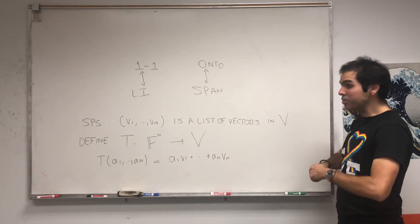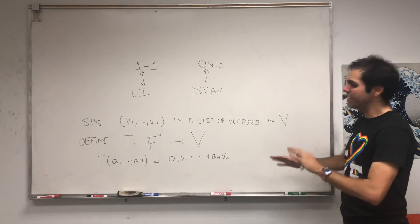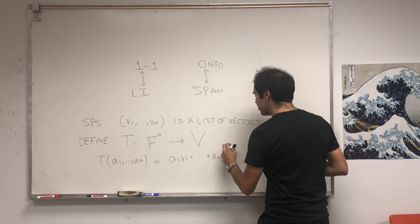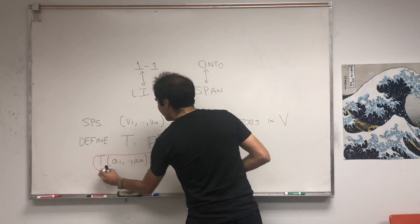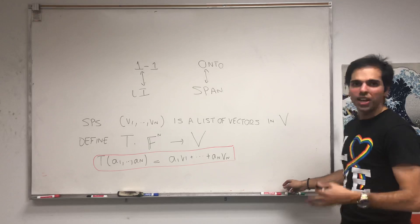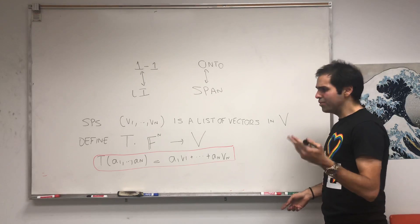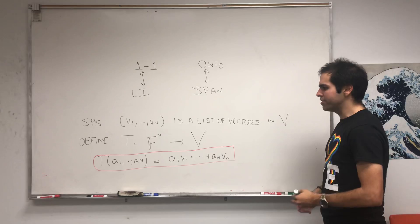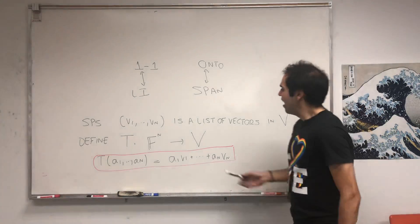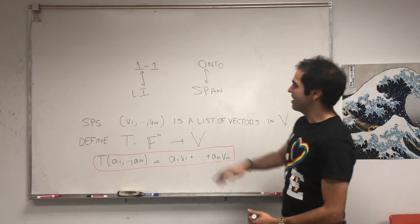So again, usually we start with v1 up to vn, but here we kind of do the opposite. I give you scalars, and you give me the linear combination. So if a1 is 2, a2 is 3, a3 is 4, then it's like 2 v1 plus 3 v2 plus 4 v3.